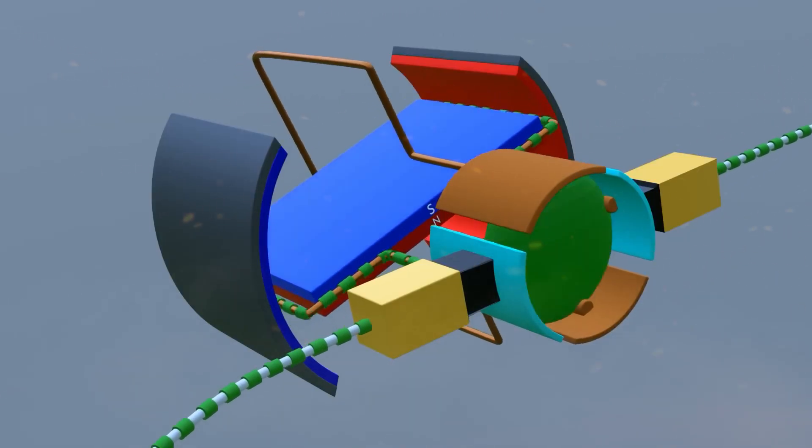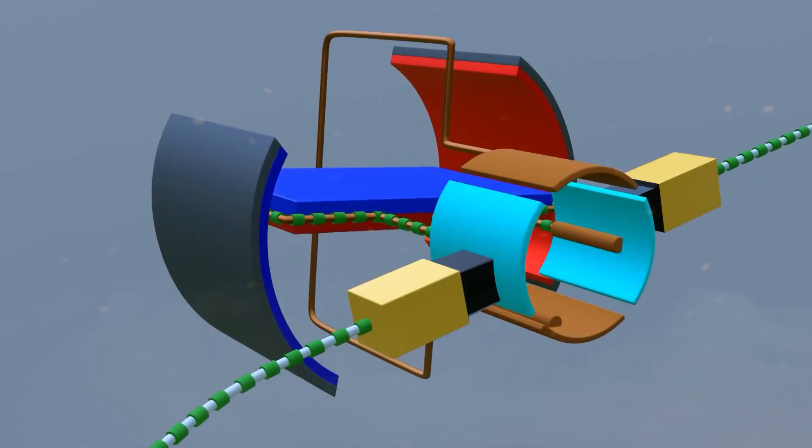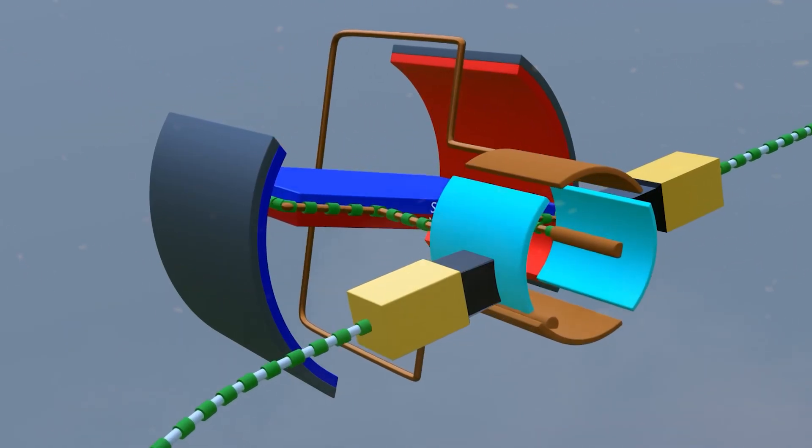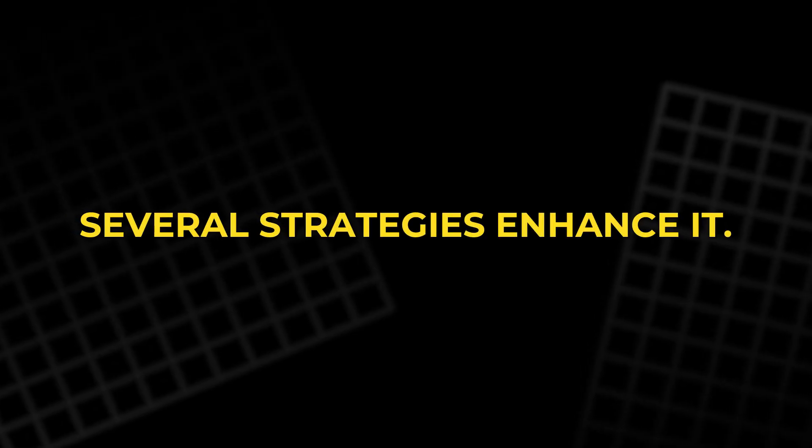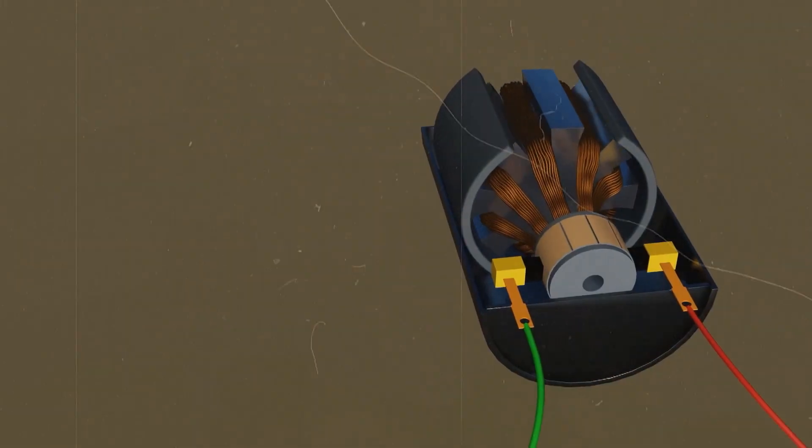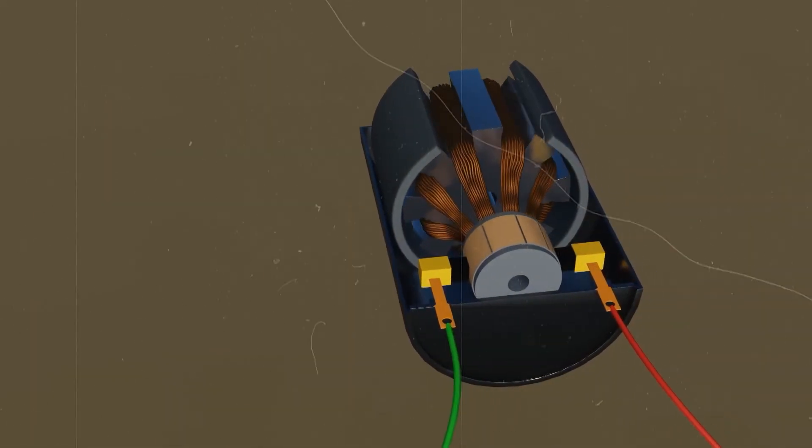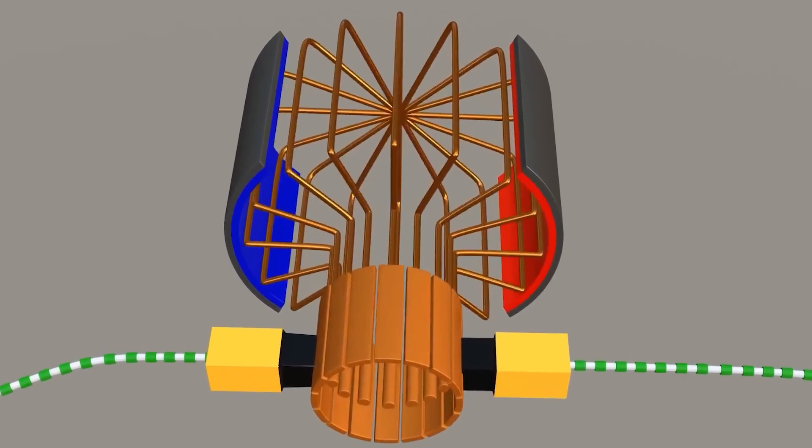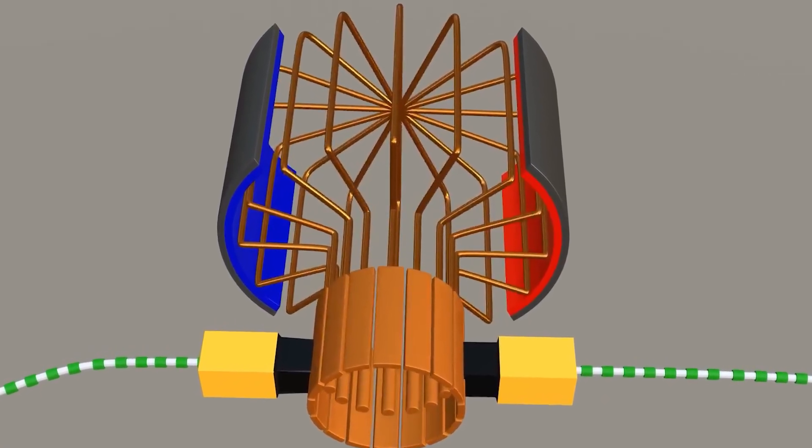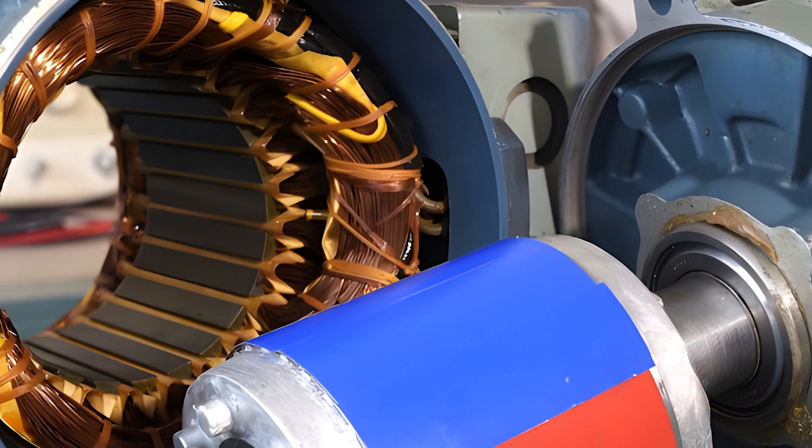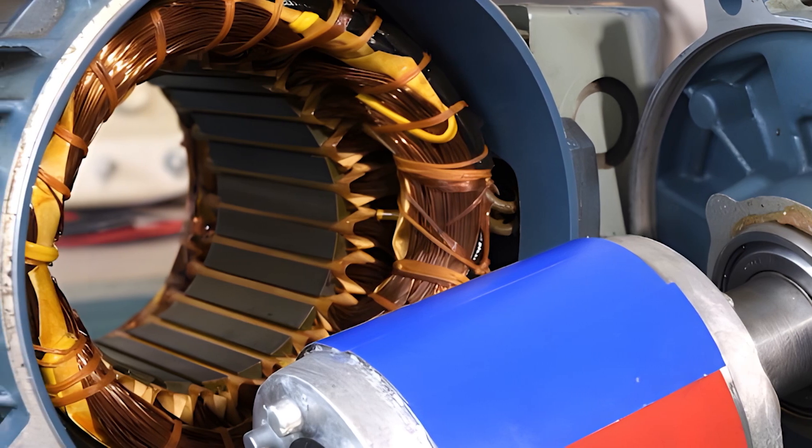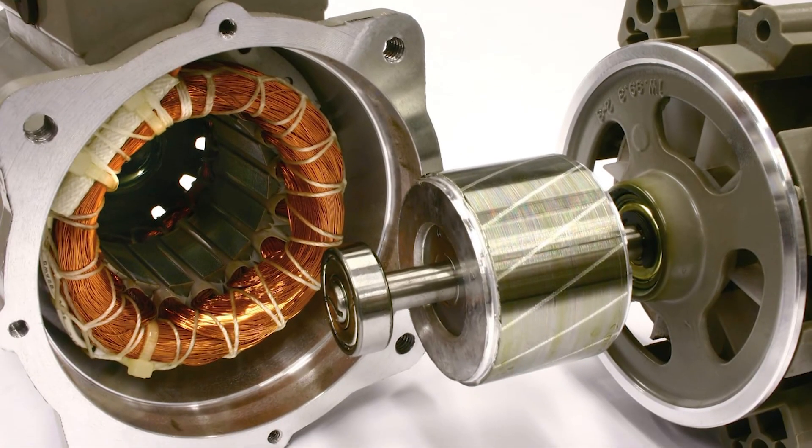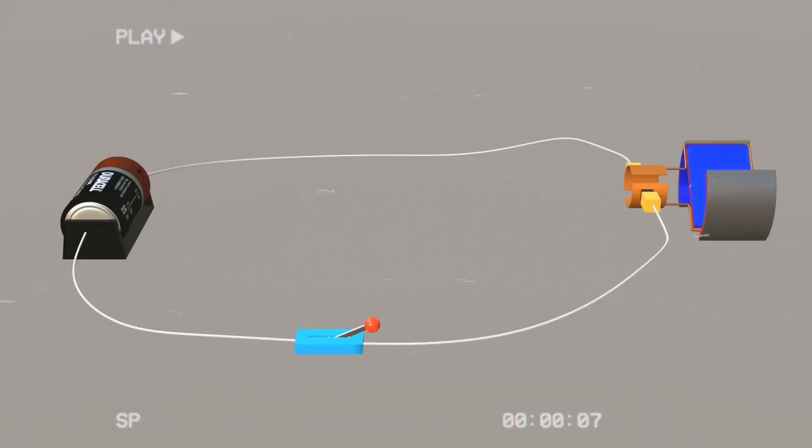Torque is the twisting force that drives rotation. The greater the torque, the more powerful the motor. Several strategies enhance it. Adding more turns of wire to each loop strengthens the electromagnet. Increasing the electrical current flowing through the wires further boosts the magnetic field. That is why inside real motors, one sees coils of copper wire wound tightly again and again. Each additional turn magnifies the strength, producing faster, stronger motion.